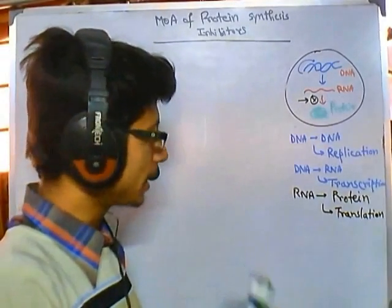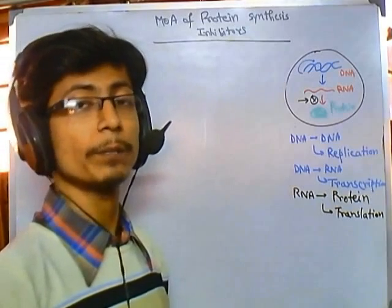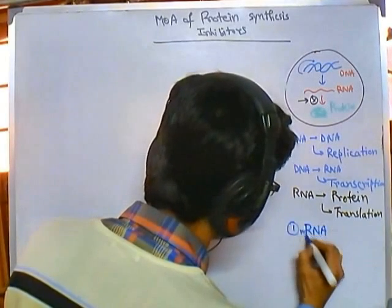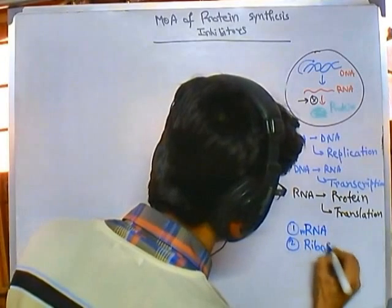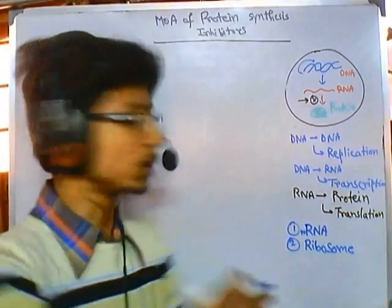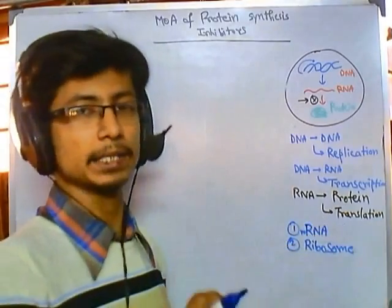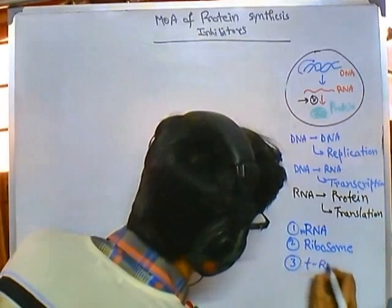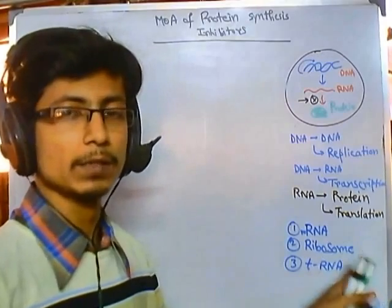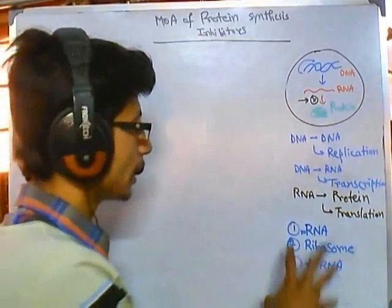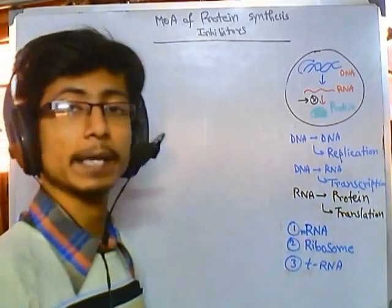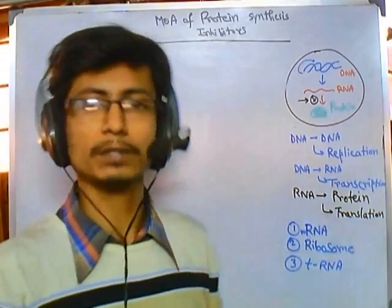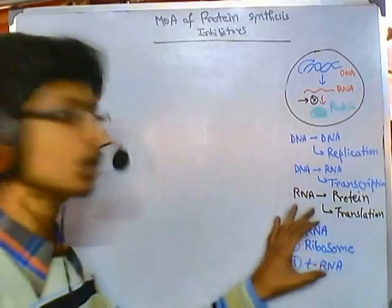For the translation process, there is a coordinated function of many different components inside the cell. One component is mRNA, which acts as the workbench for synthesis because it carries all the codons. The ribosome is the factory or machinery that adds amino acid after amino acid to make the protein. The third component is tRNA, a carrier molecule that carries amino acids for protein synthesis. Other protein factors involved include initiation factors, elongation factors, and termination factors.